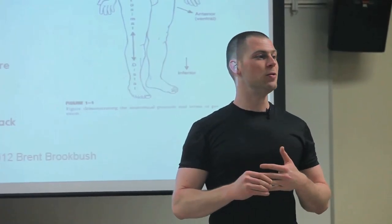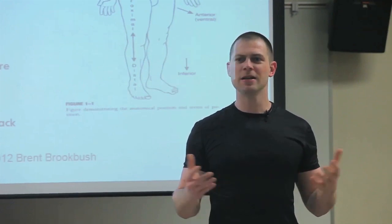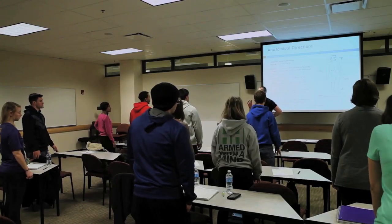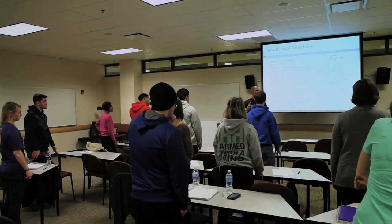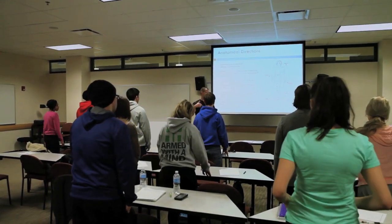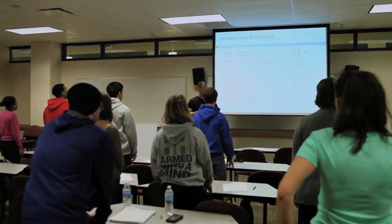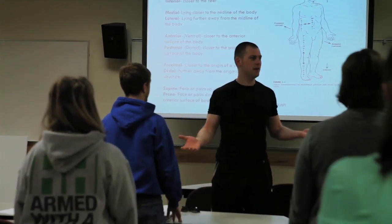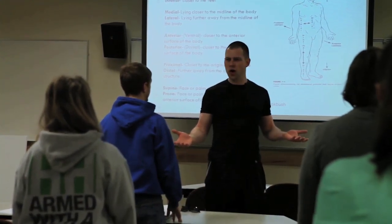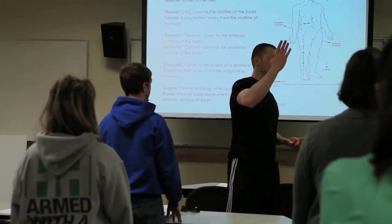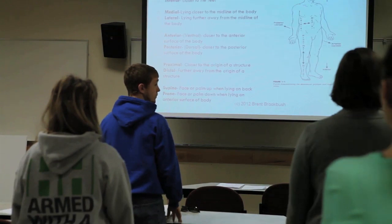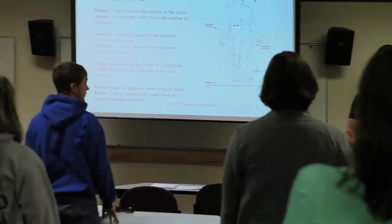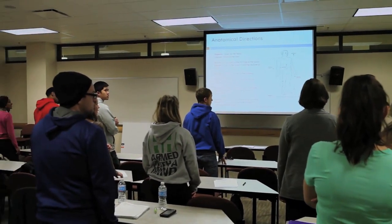Let's do dorsal — I didn't explain dorsal yet. You've got anterior and posterior, but occasionally you'll hear ventral or dorsal. Ventral generally means forward. Dorsal — what word has dorsal in it? Dorsal fin, like on a shark. Where is the dorsal fin located? Back or top surface. You'll also hear dorsal referred to as the top surface of something, like your foot.